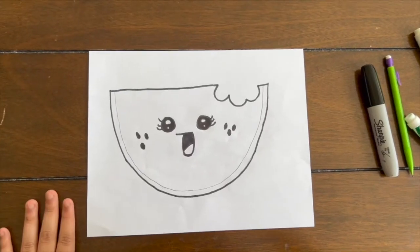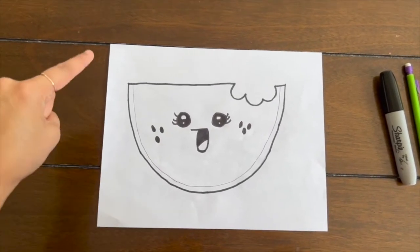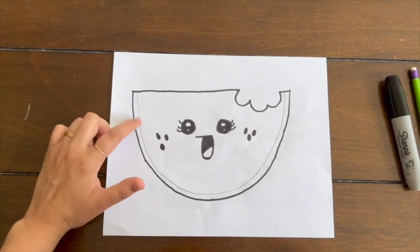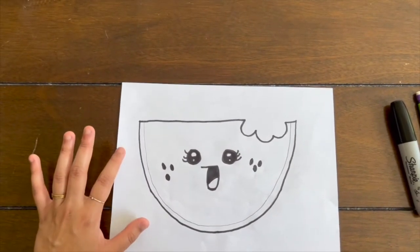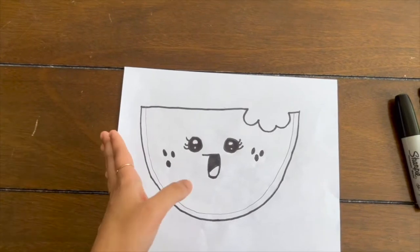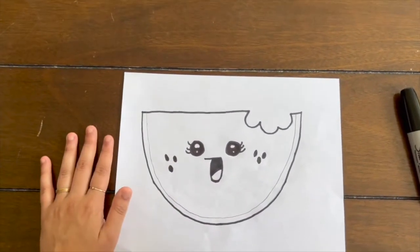So this is what our watermelon should look like once we traced it with the Sharpie. And I made sure not to do the rind inside because when we color it, we're going to have the colors kind of transition from the greens to the reds. And you'll see that in a second.